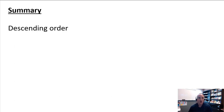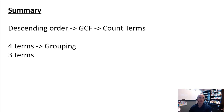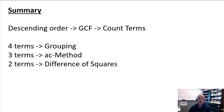In summary: always put your polynomial in descending order, then pull out a greatest common factor if possible — watch for that negative. Then proceed by counting the terms. If you have four terms, try grouping. If you have three terms, try the AC method. If you have two terms, try a difference of squares.